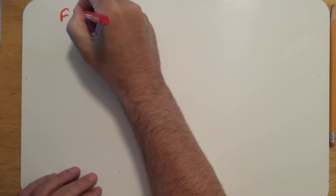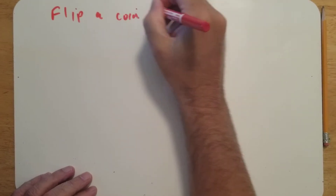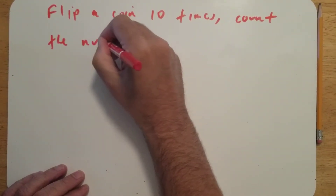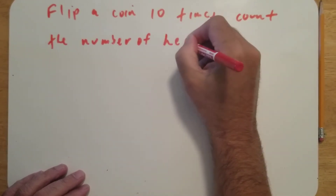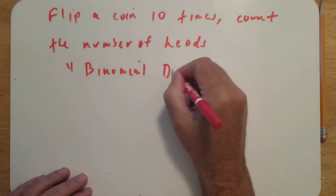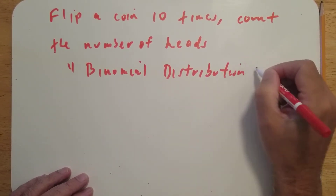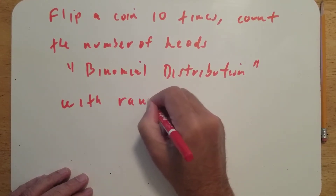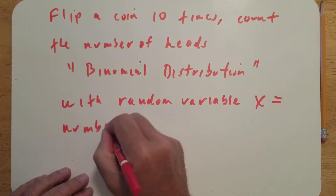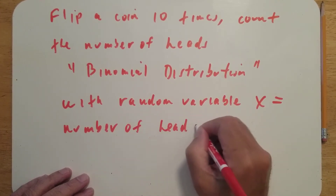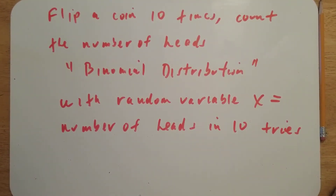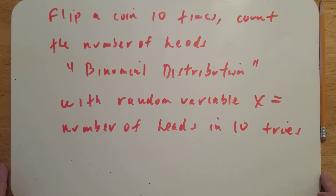Suppose you flip a coin 10 times and count the number of heads you get in these 10 flips. This is an example of a binomial distribution with random variable x equal to the number of heads in 10 tries. It's an example of a discrete distribution, and a binomial distribution has certain characteristics which I want to define.